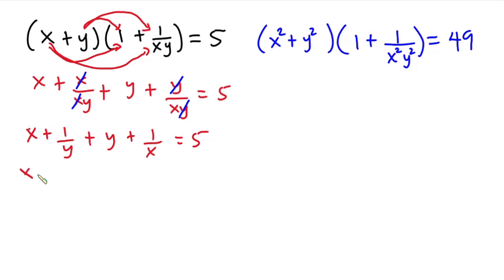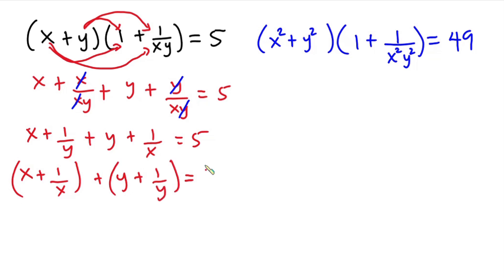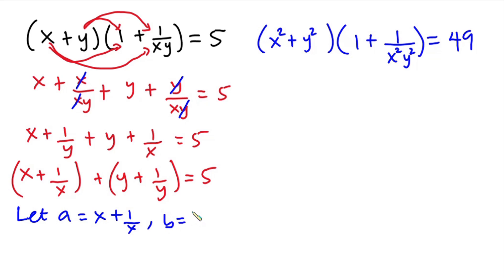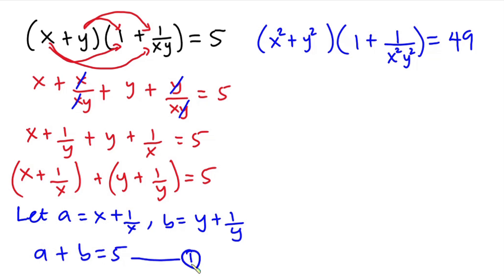Now grouping like terms, we have x plus 1 over x, then plus y plus 1 over y, and this is equal to 5. From here, I'm going to let a equal x plus 1 over x, and b equals y plus 1 over y. So this equation now becomes a plus b equals 5, and I'm going to call this equation 1.